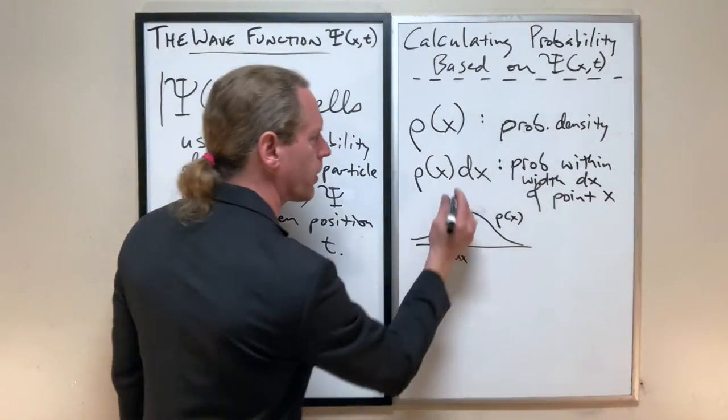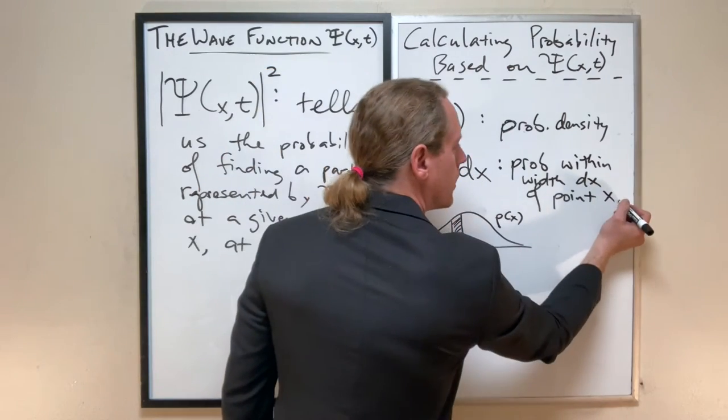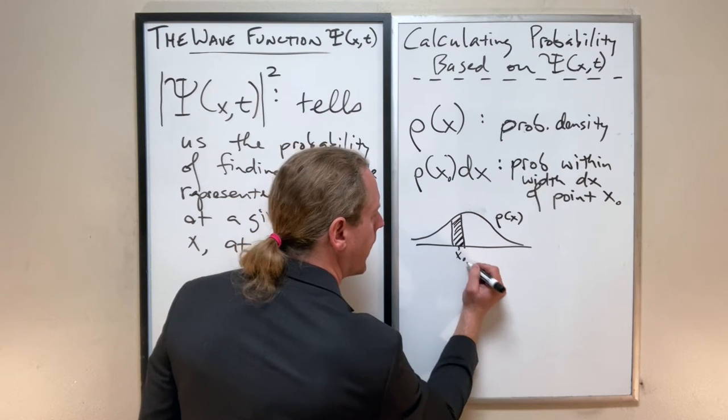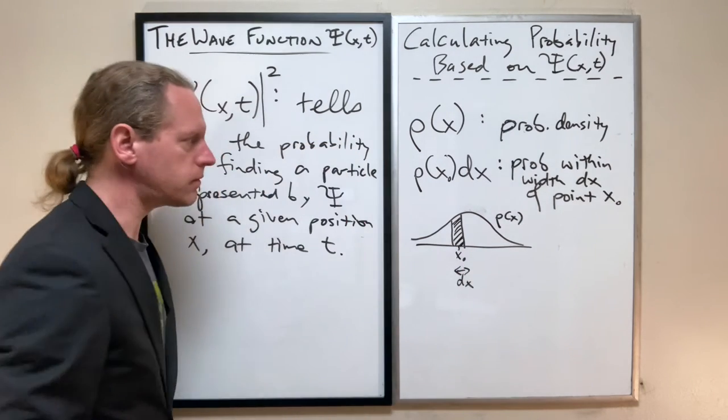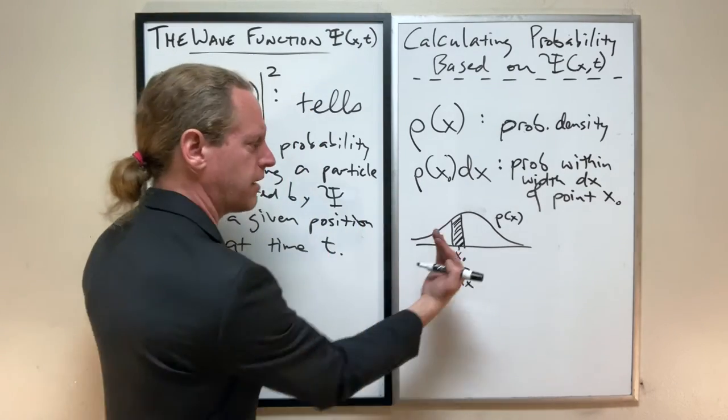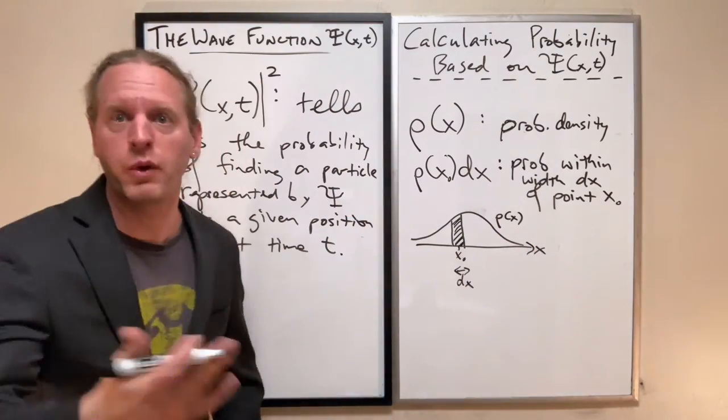Or even just to be a little bit more clear, we could even call this x naught, and the probability of finding it within dx of point x naught. So it's sometimes helpful to differentiate a set point versus a continuous variable x there, which is why I'm writing it like that.